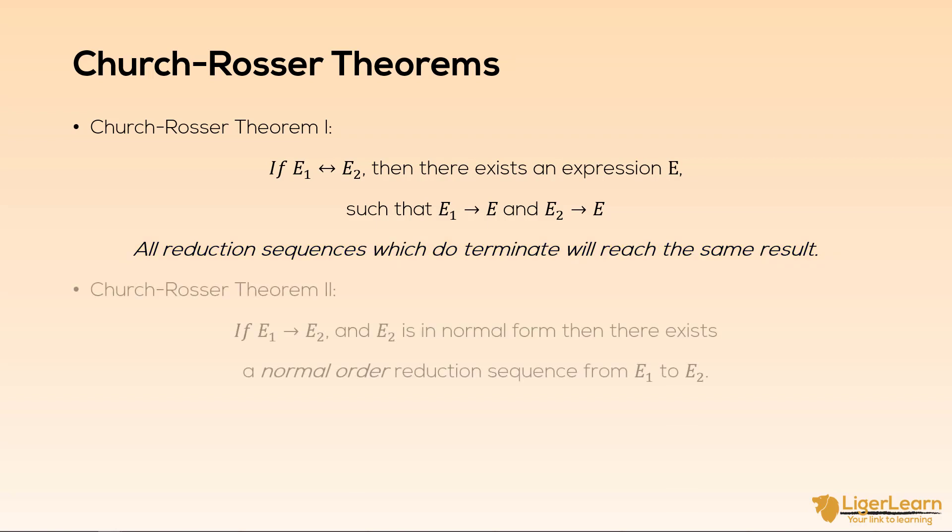The second theorem concerns the order in which reduction occurs. If e1 reduces to e2 and e2 is in normal form, then there exists something known as a normal order reduction sequence from e1 to e2. This essentially says that if the sequence does terminate and you follow normal order reduction, you are guaranteed to find the terminated result.